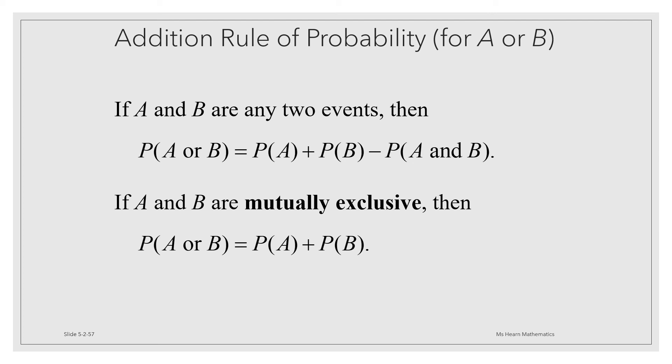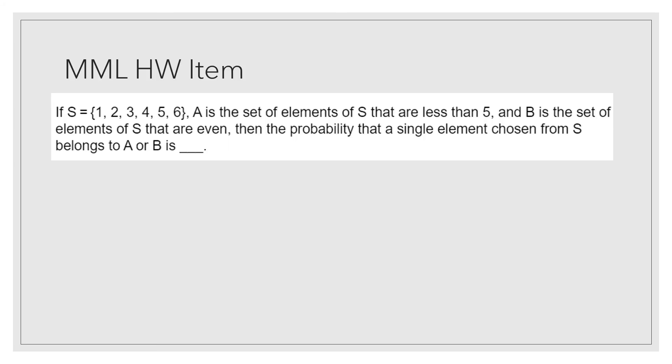So in general, when we think about finding the probability of an or, you want to think add, but be careful of any overlap. Here's an example from our MyMathLab homework. It says, if S is the set from 1 to 6, A is the set of elements of S that are less than 5, and B is the set of elements of S that are even, then find the probability that a single element chosen from S belongs to A or B. Well, first of all, if A is the set of elements of S that are less than 5, then that would mean A contains 1, 2, 3, and 4.